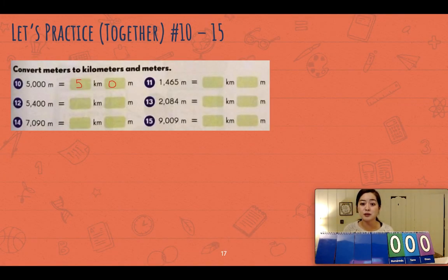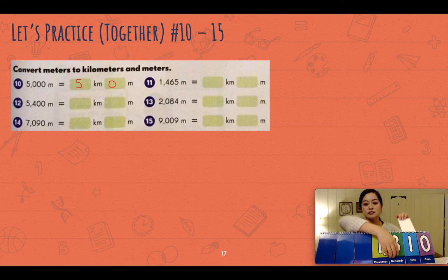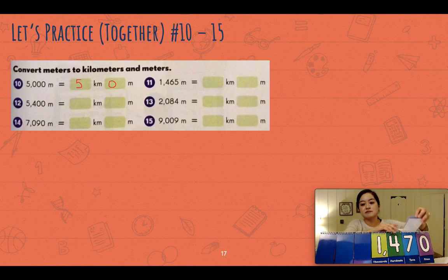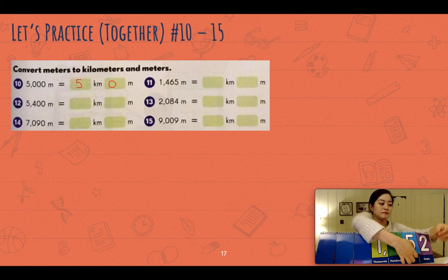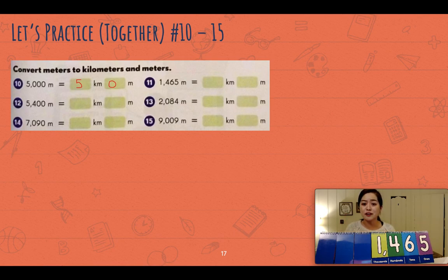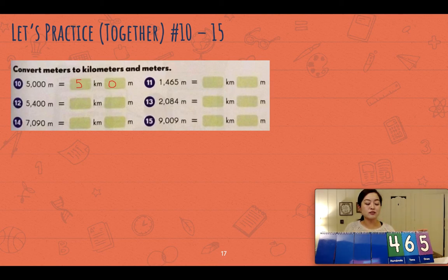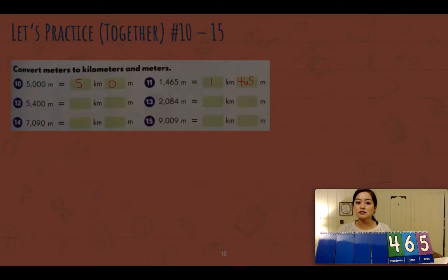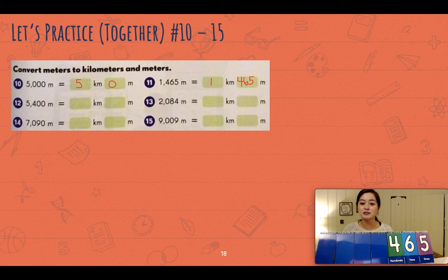Let's look at number eleven: one thousand four hundred and sixty-five. How many thousands are there? There's only one thousand, so that's one kilometer. The leftover meters are four hundred and sixty-five. The answer to number eleven is one kilometer and four hundred and sixty-five meters.